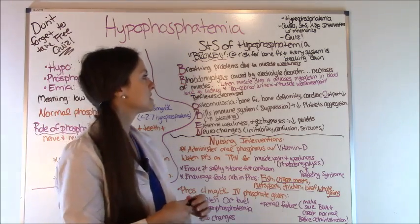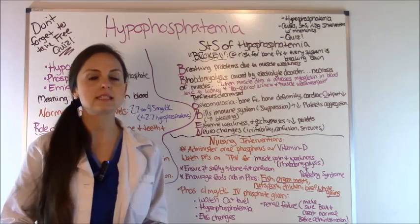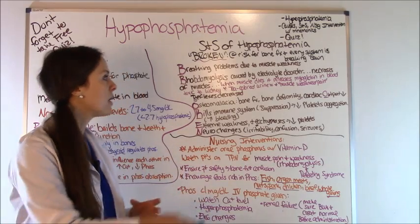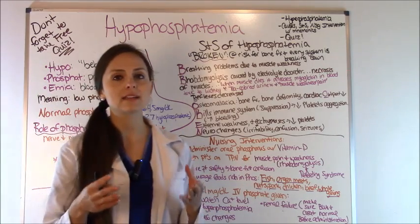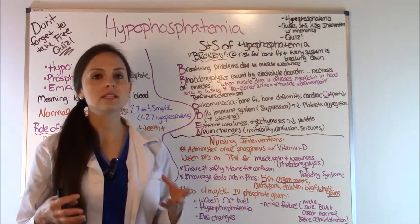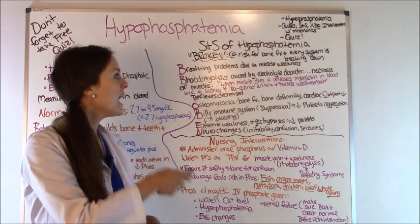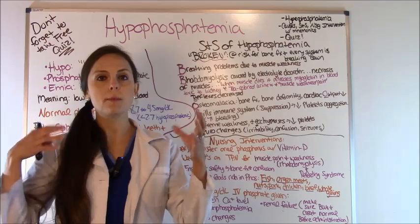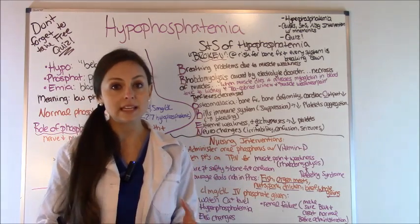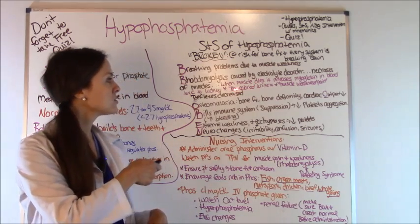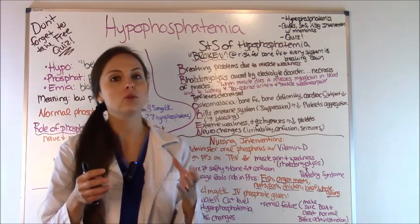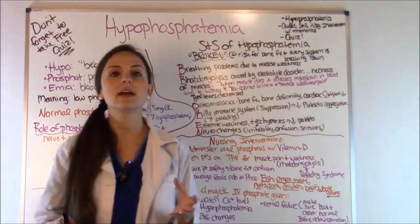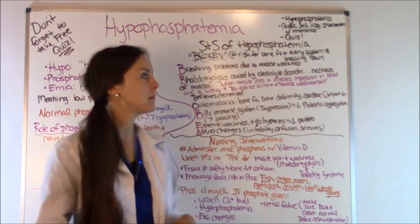R is for rhabdomyolysis, caused by the electrolyte disturbance of low phosphate and potassium. This stresses the body and causes rapid necrosis of the muscles — the muscles just break down. When the muscle dies, it releases myoglobin into the blood, which is very toxic to the kidneys and causes them to start shutting down. The patient's urine will look tea-colored. Remember that with this condition, the patient will also complain of muscle weakness and pain.